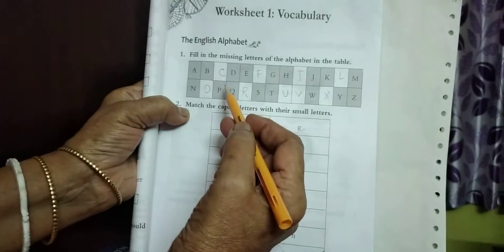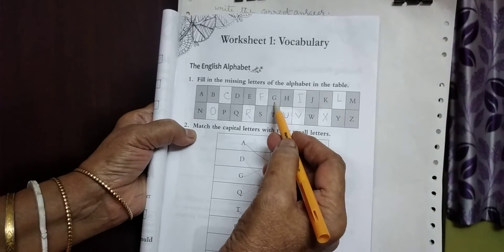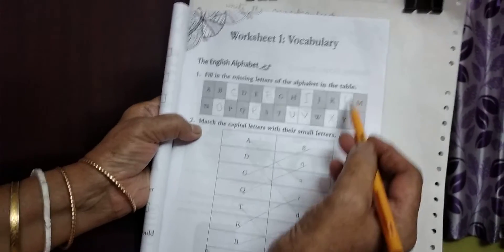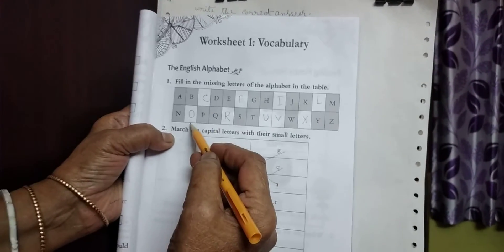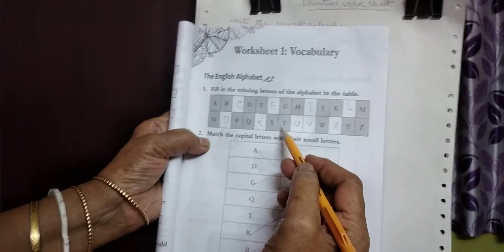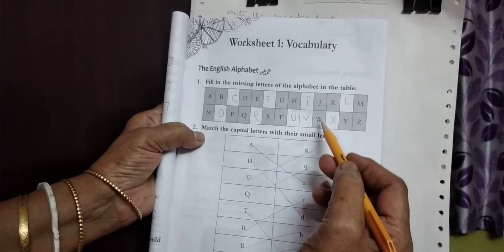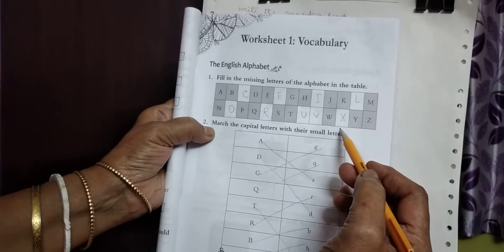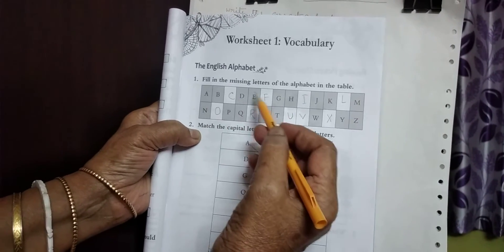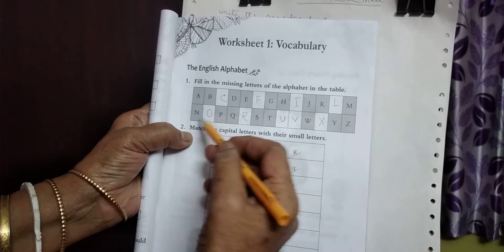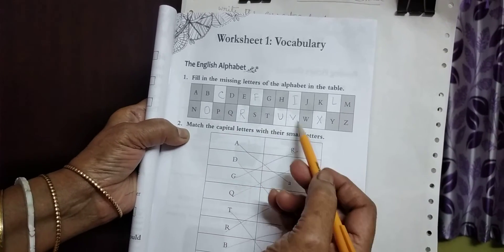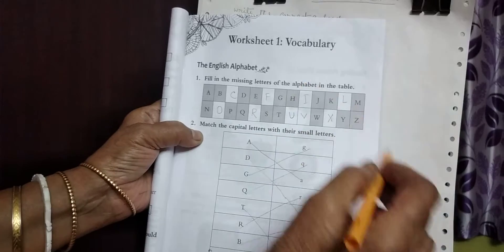Fill in the blanks with missing letters. Let us now see: AB, fill in the blanks with C. DE, fill in the blanks with F. GH, fill in the blanks with I. JK, fill in the blanks with L. MN, fill in the blanks with O. PQ, fill in the blanks with R. ST, fill in the blanks with U. VW, fill in the blanks with X. YZ. Now the full alphabet: A, B, C, D, E, F, G, H, I, J, K, L, M, N, O, P, Q, R, S, T, U, V, W, X, Y, Z. These are 26 letters.